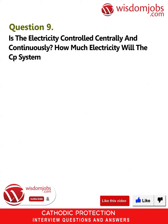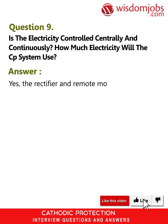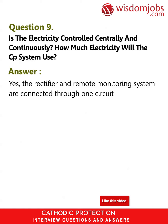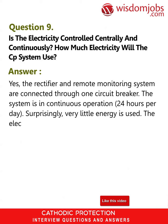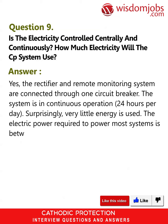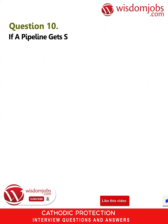Question 9: Is the electricity controlled centrally and continuously, and how much electricity will the CP system use? Answer: Yes, the rectifier and remote monitoring system are connected through one circuit breaker. The system is in continuous operation 24 hours per day. Surprisingly, very little energy is used — the electric power required to power most systems is between 100 and 1,000 watts.